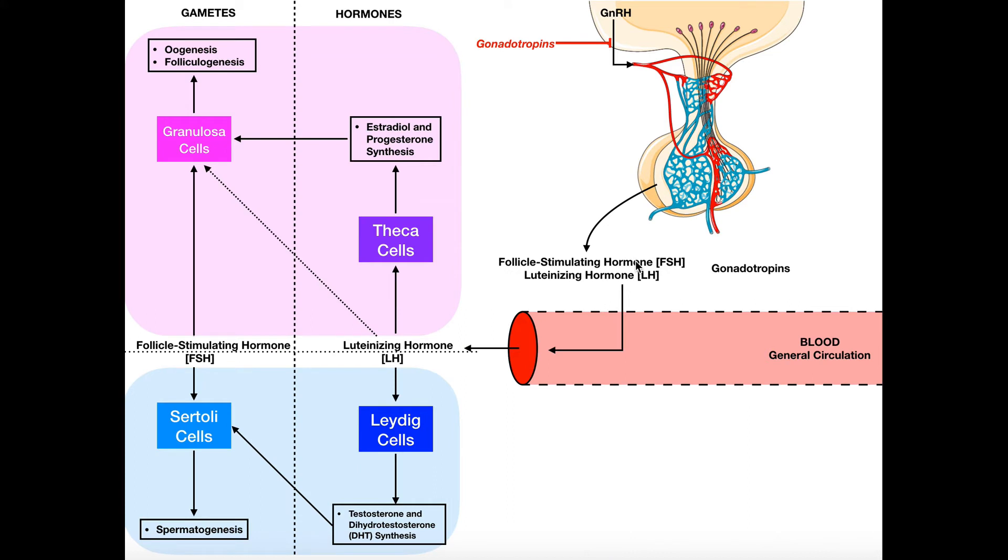These gonadotropins, FSH and LH, cause the release of other hormones, and again that depends on which sex you are. Females, you'll see estradiol and progesterone mainly, and in males you'll have testosterone and dihydrotestosterone mainly.